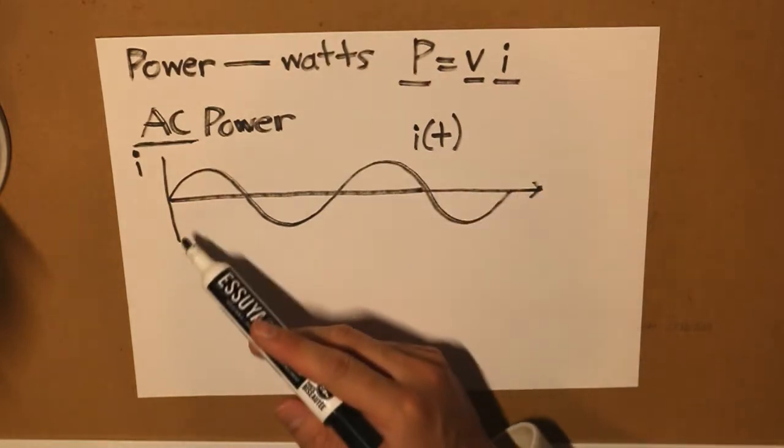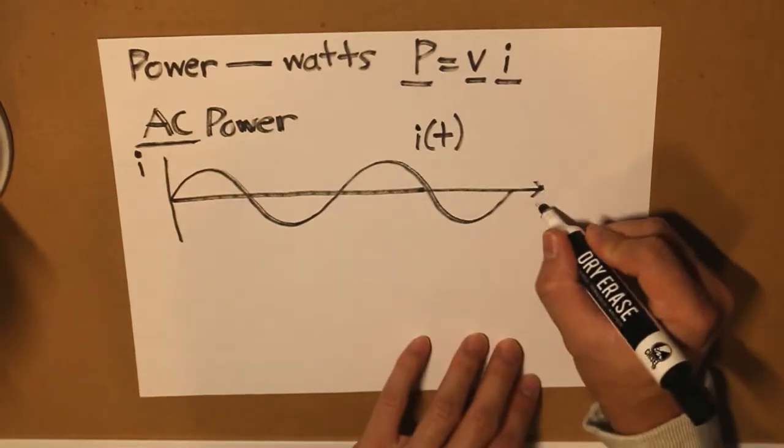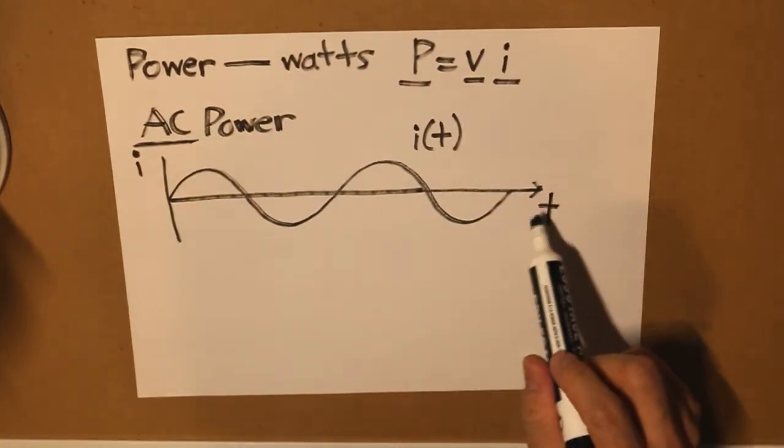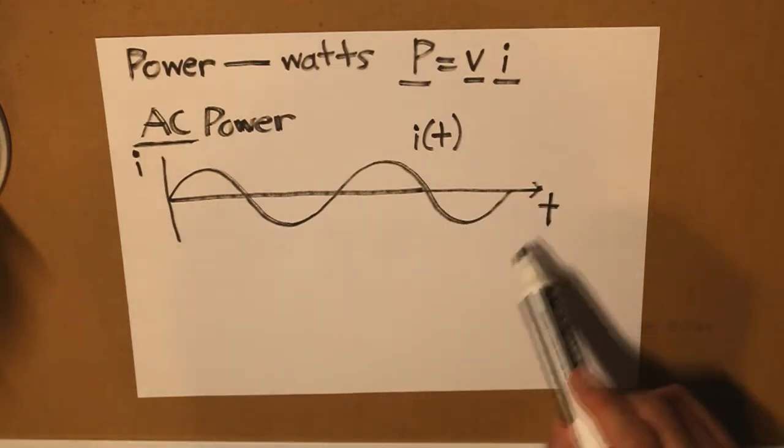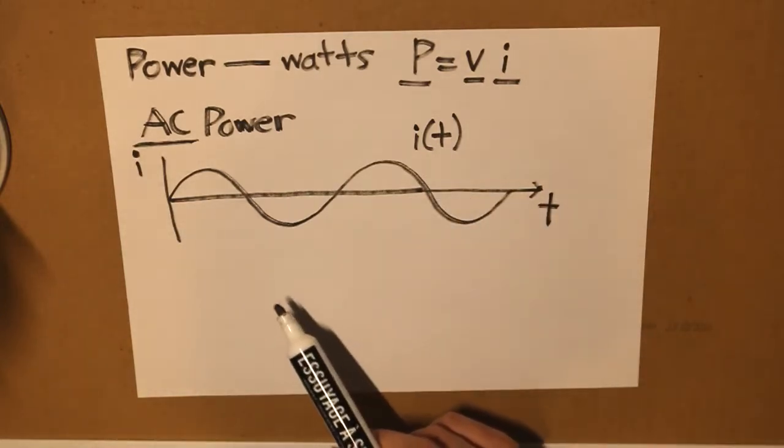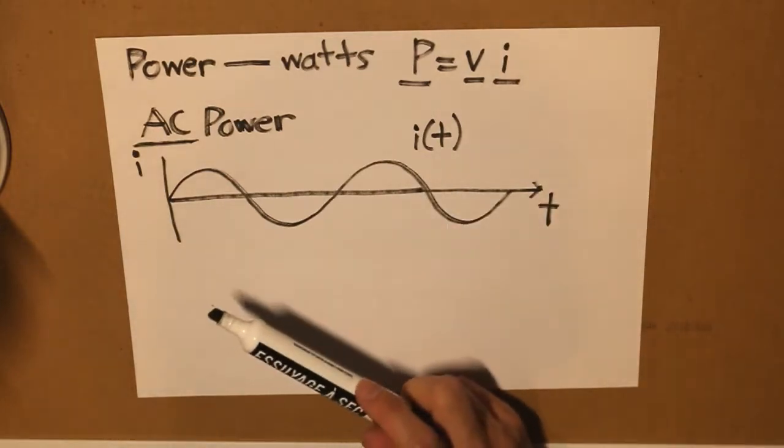Now I(t) over a specific period of time would change and would vary. Forgot to draw a time domain here to specify our current waveform. And this is a very basic example to explain how AC works.